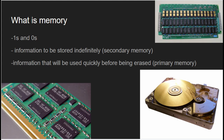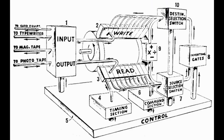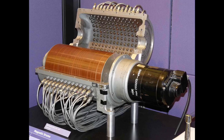In the early 1940s, the first computers used magnetic drum memory, which was a rotating cylinder coated in magnetic material. The data was stored on the drum's surface, and the read-write heads accessed it as the drum rotated. This type of memory was slow and could store only a limited amount of data.